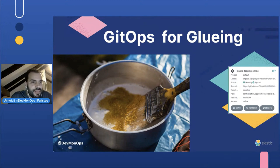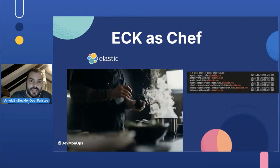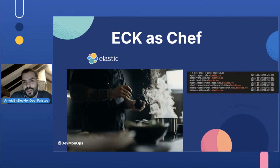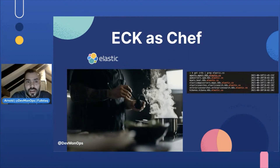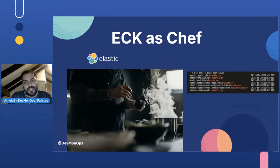Next to GitOps and Argo, we also have the Chef, which is ECK. ECK itself is our Chef for operating our components such as Elasticsearch, Kibana StatefulSets, and really the pods. The operator is not only helpful for deploying everything — it's also really helpful for maintenance and steering our deployments, like rolling upgrades. It's all driven by the manifests we provide to our cluster and the intelligence of the operator itself.